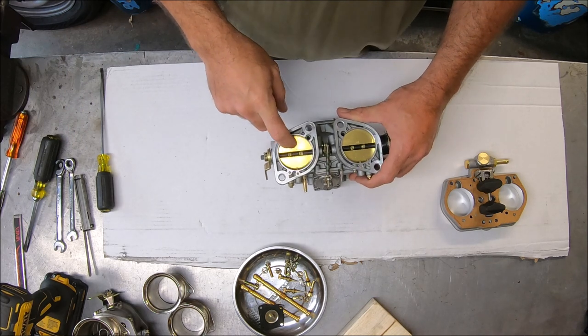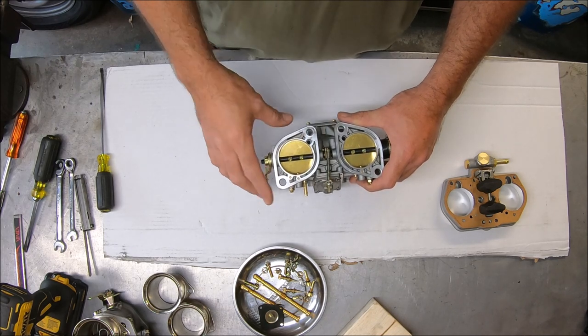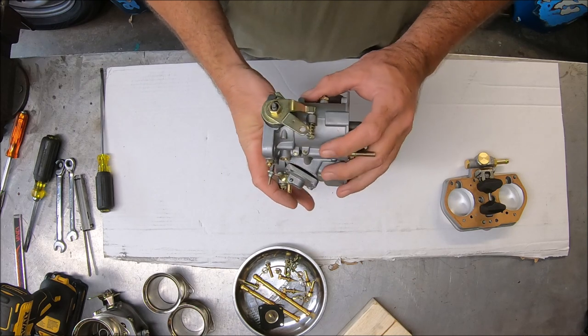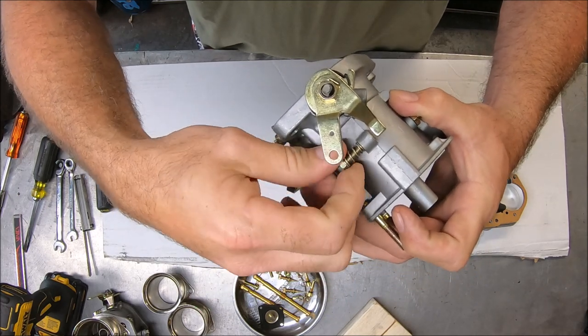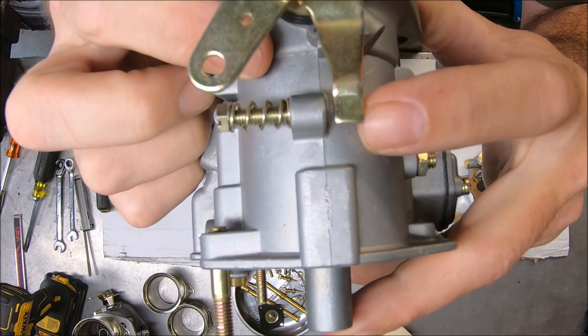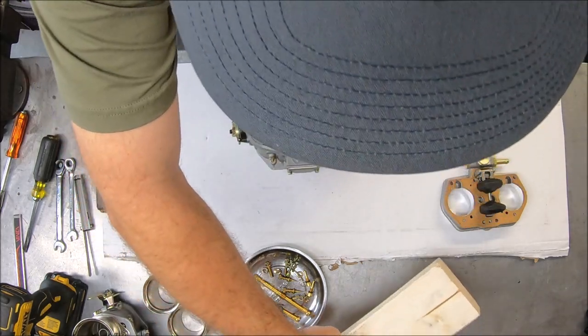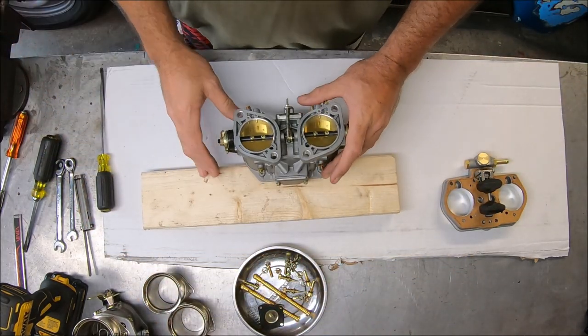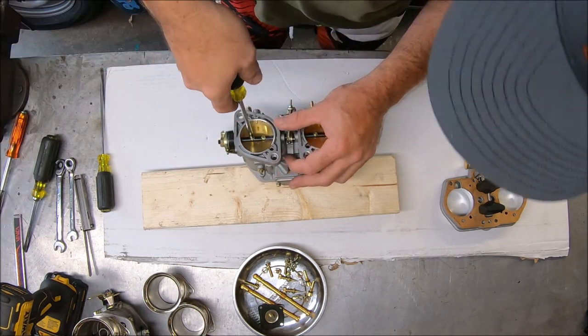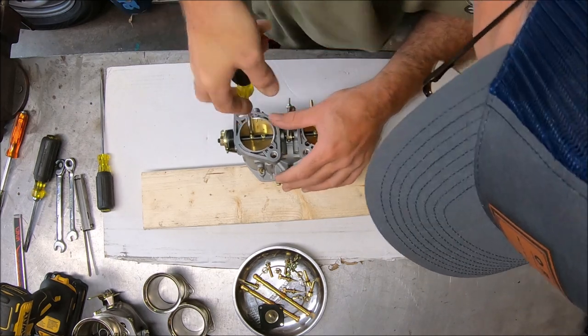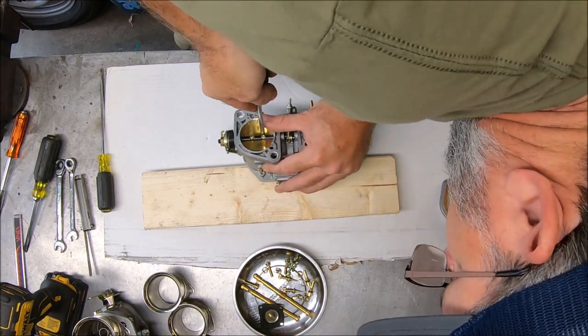These butterflies. If these butterflies are not centered properly, you will not get it to run right. So what we're going to do is we're going to take our idle stop right here and we're going to back it out until it doesn't touch. I'm going to take a block of wood here. Now with your Phillips head screwdriver, let's put a little pressure. Turn them. There we go. Loosen them up just that little bit. Loosen them all four.